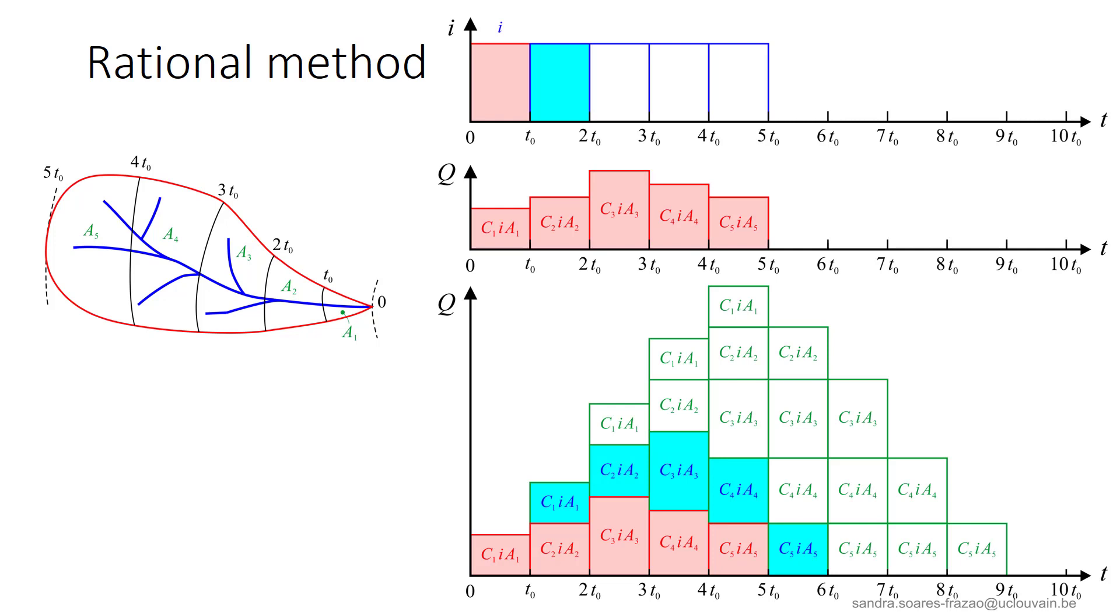We can continue like this for a rain duration of 5 T0, that is the time of concentration of the whole catchment. We see that the maximum discharge is obtained here when all the subcatchments contribute to the discharge at the outlet. This is expressed by this equation.